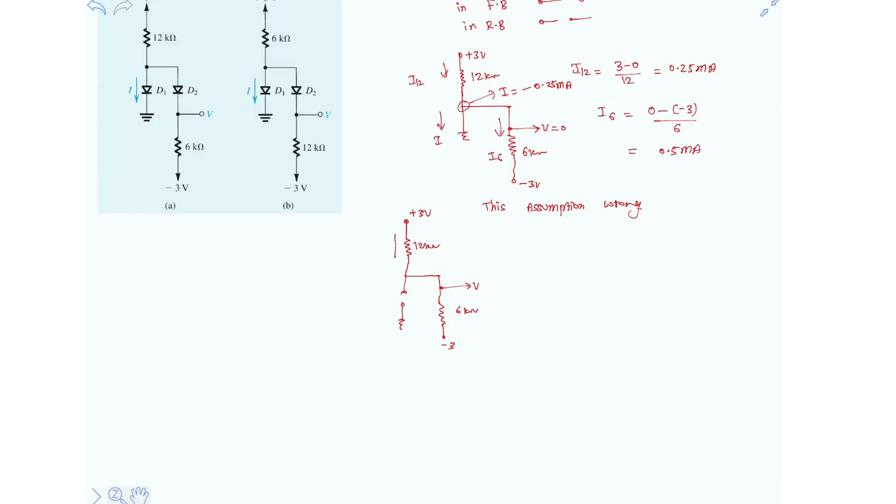So now I-12kΩ resistor and I-6kΩ resistor both are equal because both are in series now. So that I, let's take this is Ix flowing in this direction.